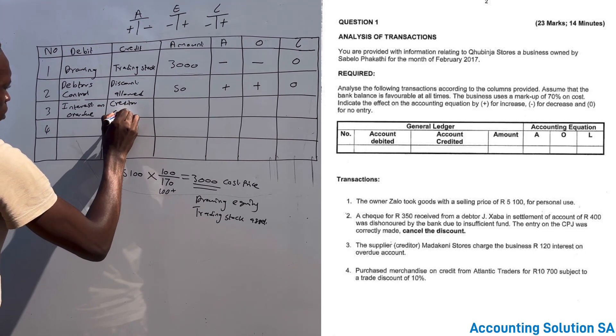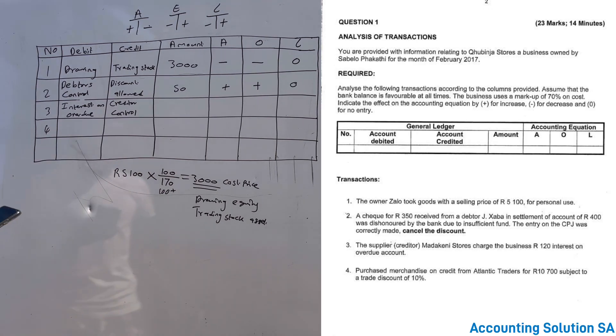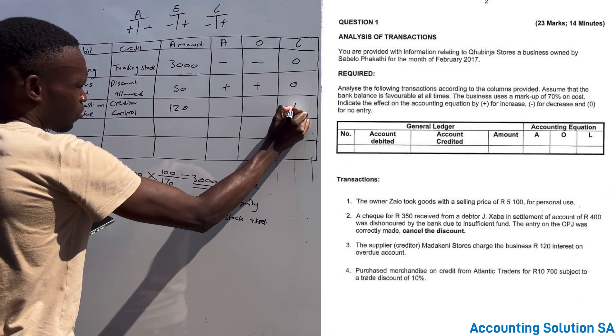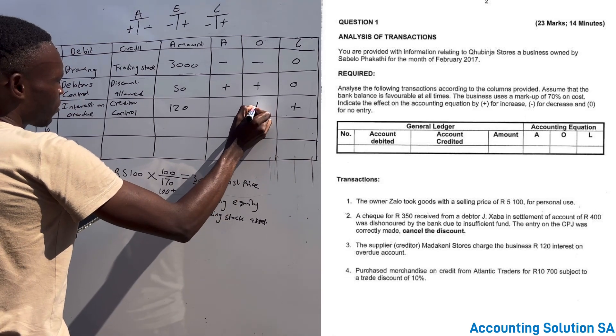Why this? Interest increase because liability has increased by creditors control. Our supplier liability will also go up by an amount of 120. Liabilities go up and our owner's equity decrease because of the expense that we are incurring.